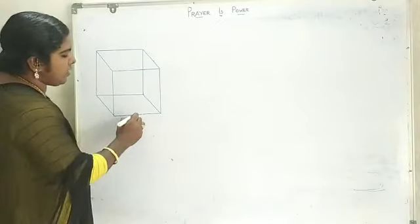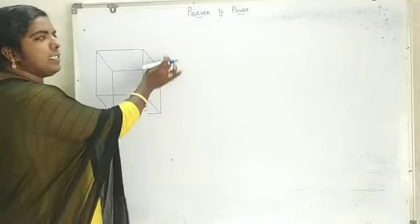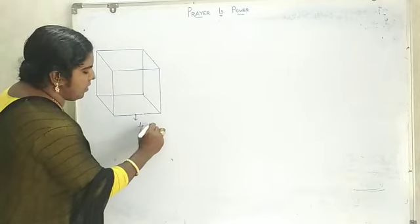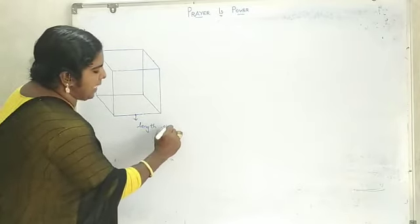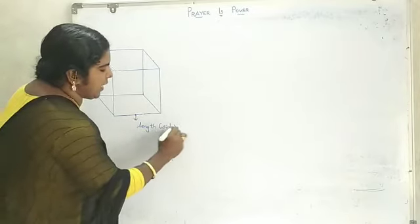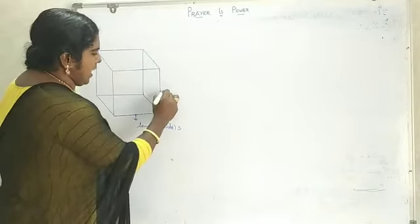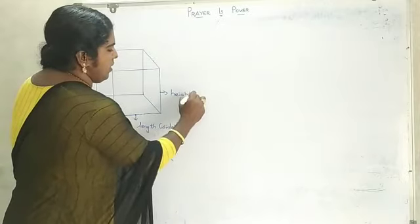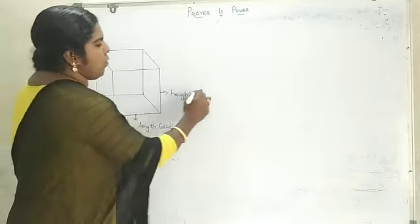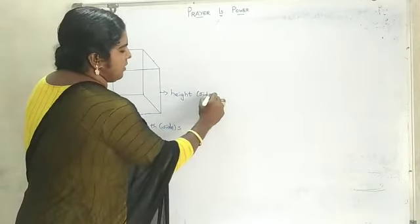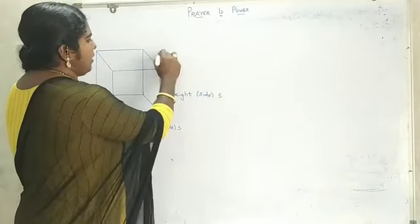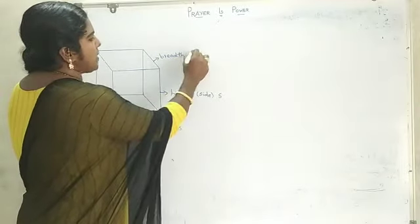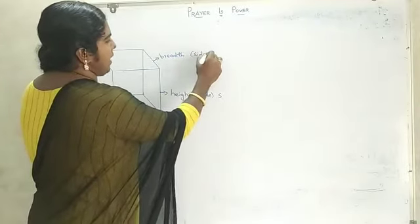Each edge of a cube is called a side. This edge is named as length — that means side, and side is denoted as S. This edge is called height; the height of a cube is also called side S. And this is breadth — the edge of a cube is also called side S.